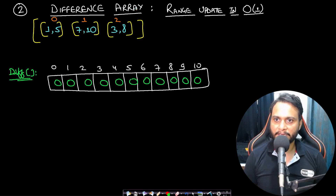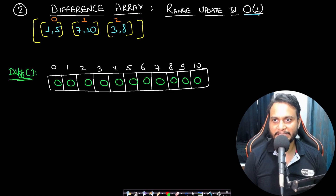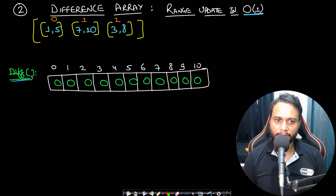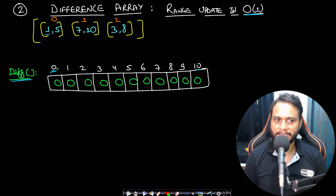We can solve this problem even more optimally using the difference array technique. The difference array's main goal is to perform range updates efficiently — when you want to increase or decrease values in a given range, each update can be done in O(1) time. I take an array called 'difference' whose size spans the minimum and maximum interval values. Since the minimum value is 1 and the maximum in this example is 10, the array runs from index 0 to 10.